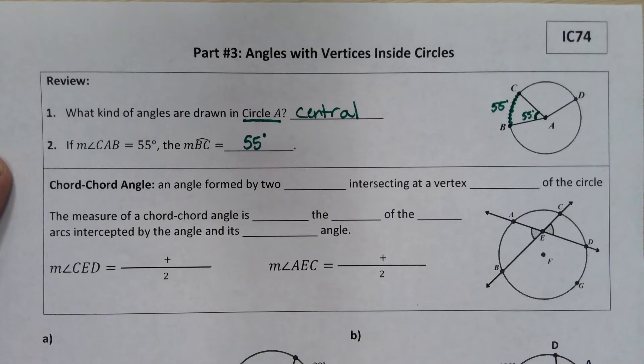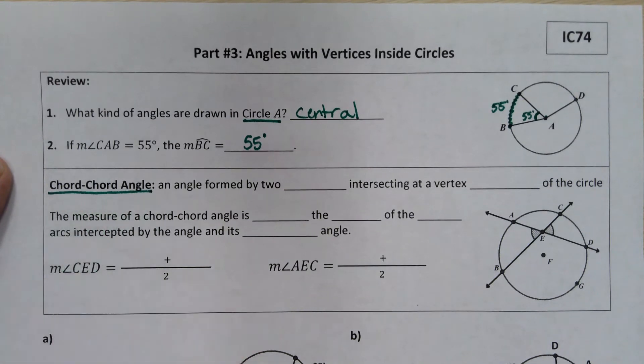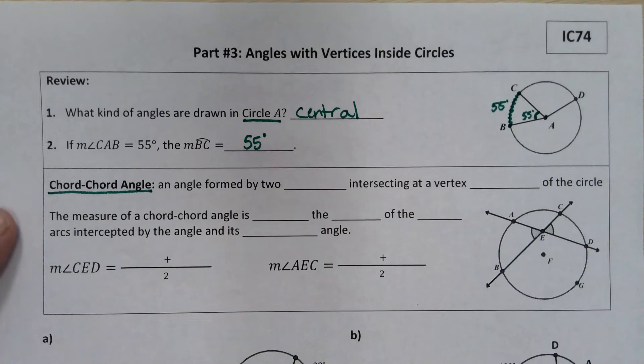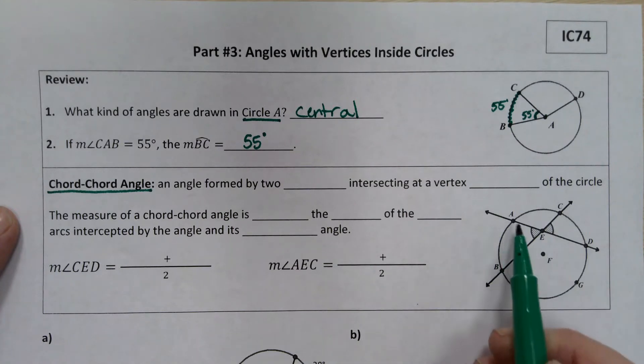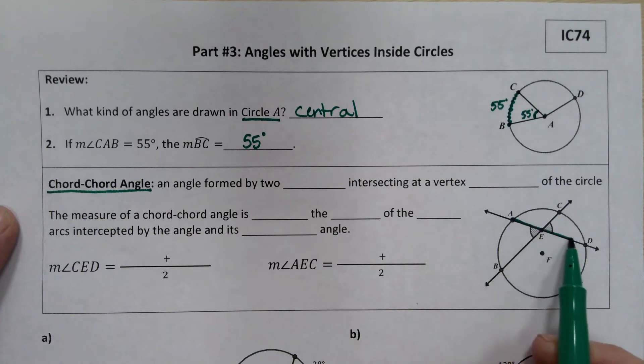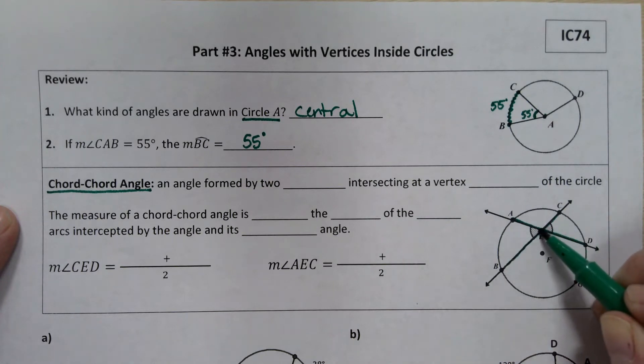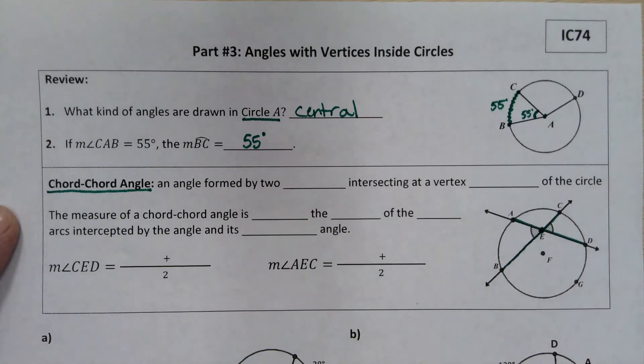What we're going to look at today is a second type of angle that has a vertex inside the circle. It's not going to be at a particular location like the center. So in this example, the center of the circle is point F, but these two chord-chord angles intersect inside the circle at point E, which is just a random interior point.